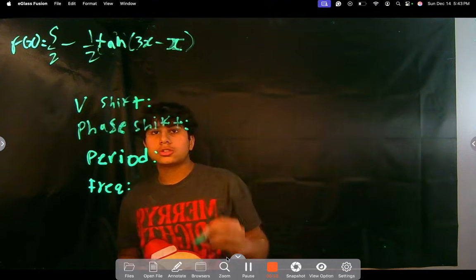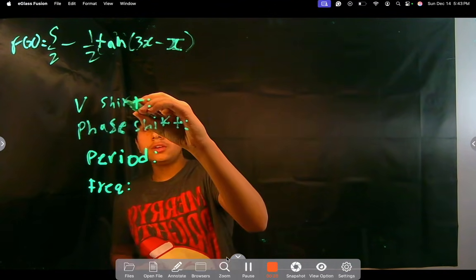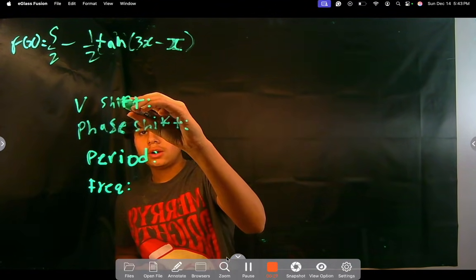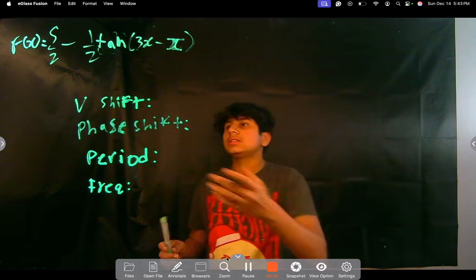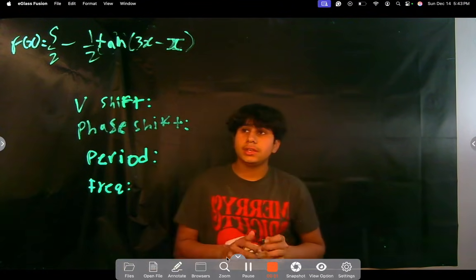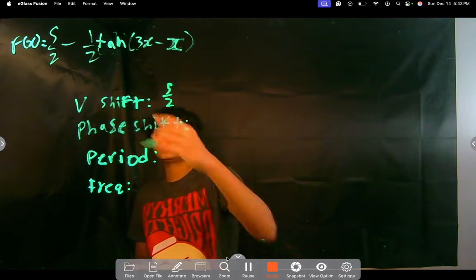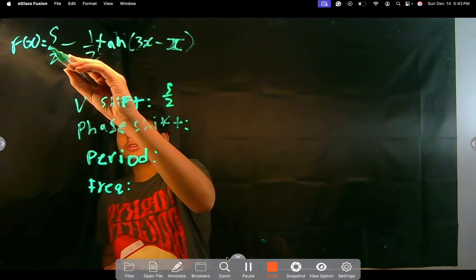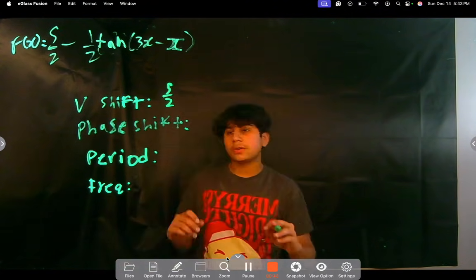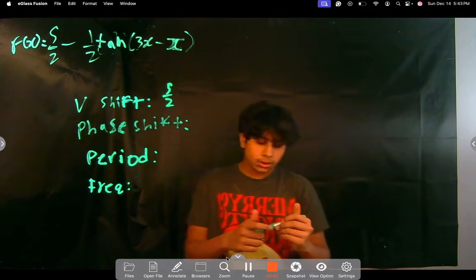How do we find the vertical shift? That's really easy. That is the change on the y here, which is 5/2. It's positive 5/2 because there's no sign on the 5/2 here, so we know that the vertical shift is 5/2. It's going to go up 5/2.